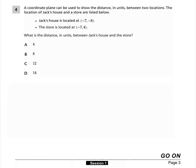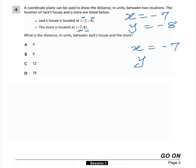Question 4 says a coordinate plane can be used to show the distance in units between two locations. Jack's house is located at (-7, -8), meaning X is -7 and Y is -8. The store is located at (-7, 4), so the X coordinate is -7 and Y is 4. The question asks: what is the distance in units between Jack's house and the store?